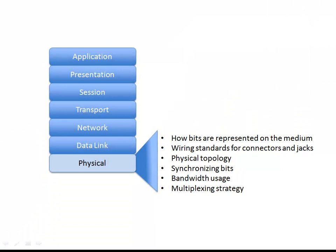Let's look at a few other things the physical layer does. Wiring standards for connectors and jacks — for example, an RJ45 connector set up for Ethernet uses pins 1, 2, 3, and 6. There's the TIA/EIA 568B standard that defines how to wire up an RJ45 connector for a 100BASE-TX Ethernet network. The physical topology is also a physical layer component — whether we have a bus topology, a ring topology, or a star topology.